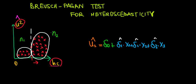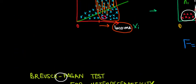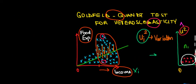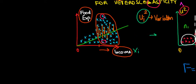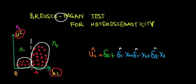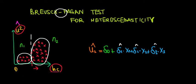Let's have a look at this second test for heteroscedasticity. It's called the Breusch-Pagan test. It's basically a bigger version of the one that we did in the previous video, the Goldfeld-Quandt test. And the idea is this.